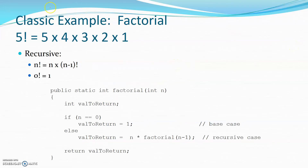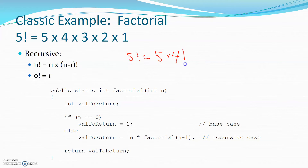A recursive approach — the idea is that if we think of 5 factorial, we can define it as 5 times 4 factorial. So 5 factorial equals 5 times 4 factorial. And so n factorial is defined as n times (n minus 1) factorial. That means we could redefine 4 factorial as 4 times 3 factorial.